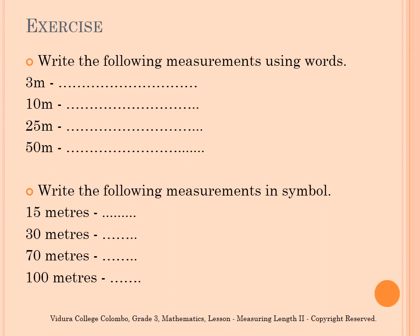Question number 2: Write the following measurements in symbols. The given 4 measurements are written using numbers and words. What I want you to do is convert the word 'metres' into the symbol M. So the first one is 15 metres — you have to rewrite it as 15 M.